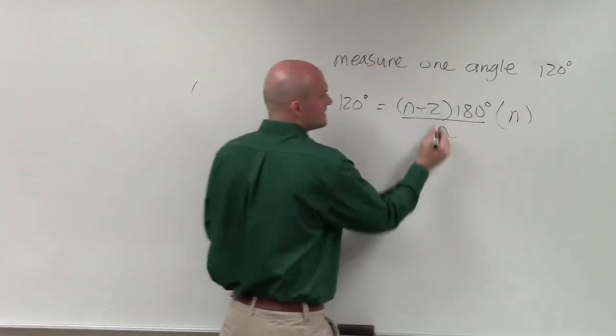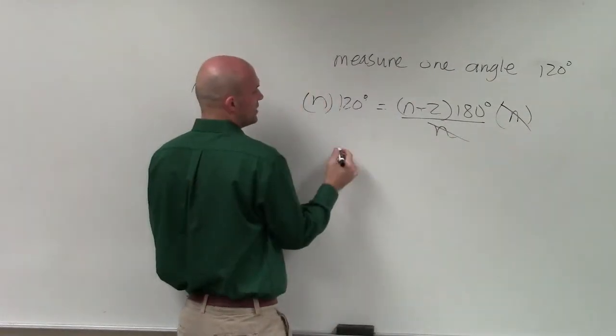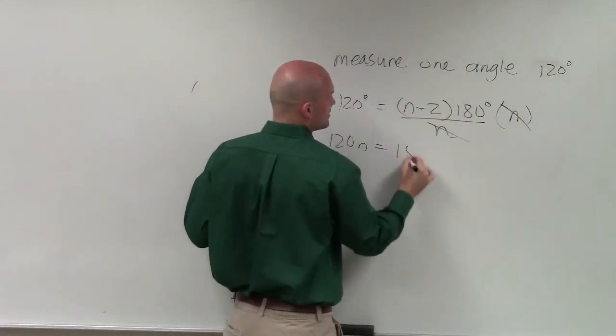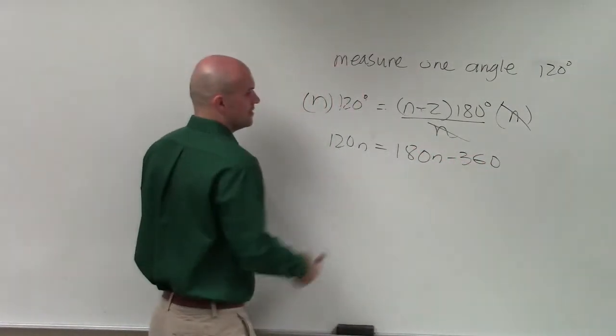So please don't move. I need to get the n off the bottom, so I multiply by n on both sides. Therefore, I have 120n equals—I'll do distributive property—180n minus 360.